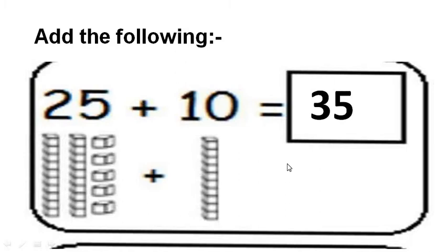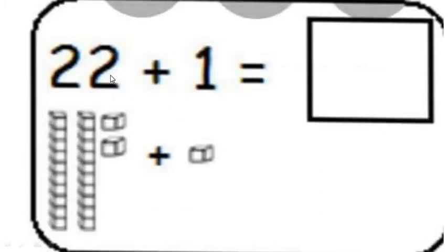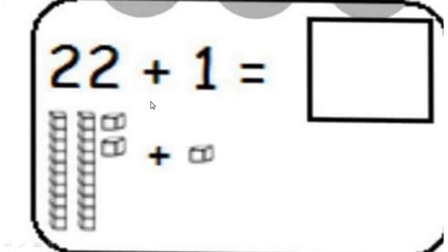Want to learn something more? 22 plus 1. This is the blocks of 22, and we are going to add more to it. I told you that when you add number 1 to any number, the answer is just the number after the given number. So by adding 1 to 22, which number will we get? Yes — by adding 1 to 22, we get number 23.